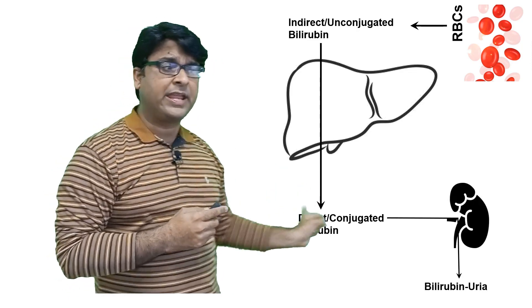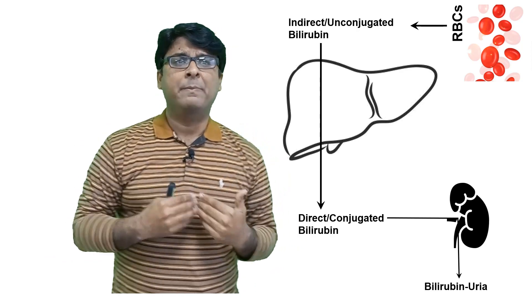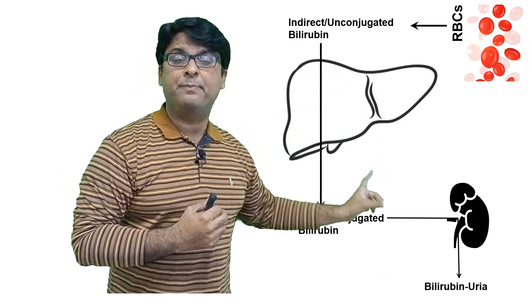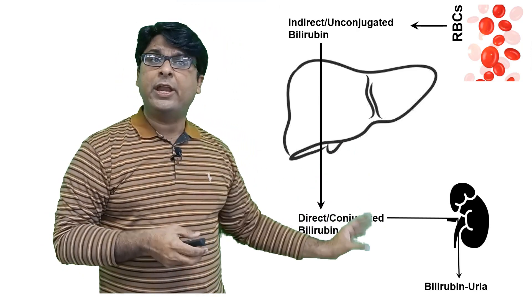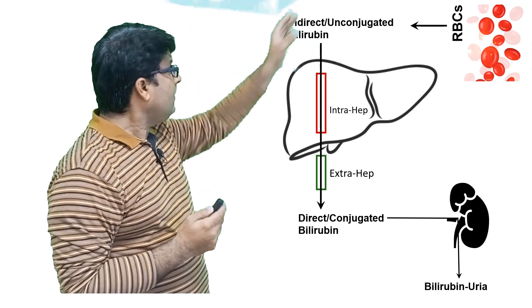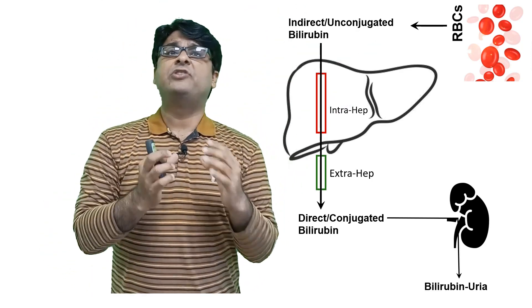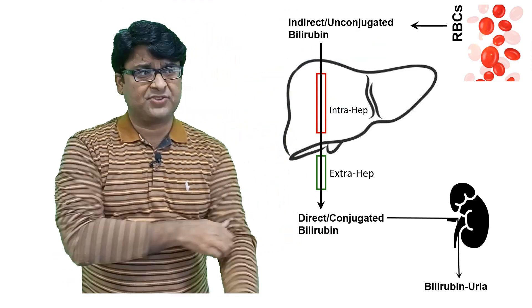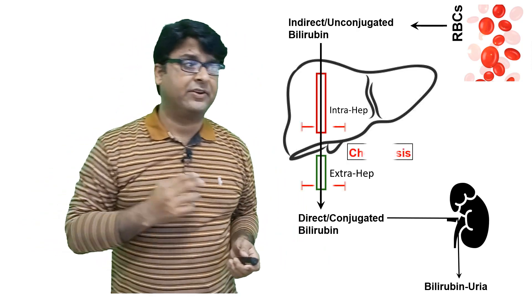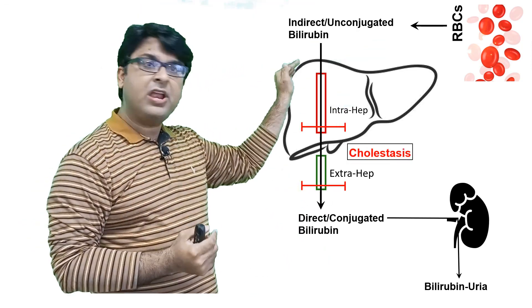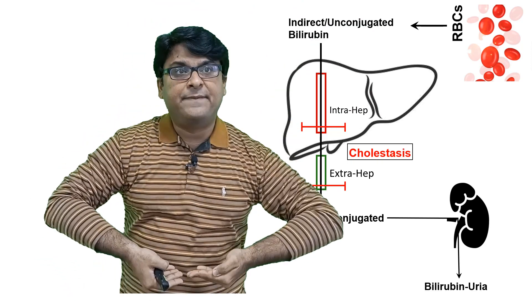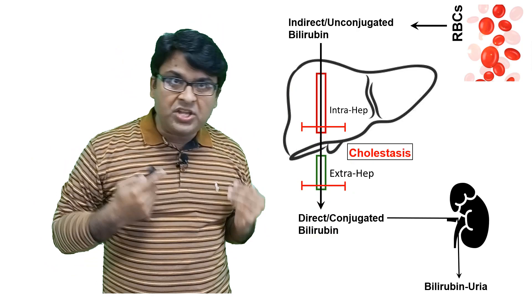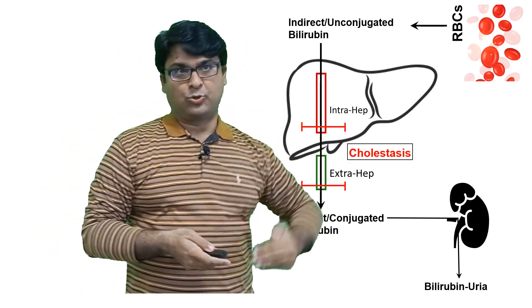Conjugated bilirubin can be excreted in the urine — this is what we call bilirubinuria. Unconjugated indirect bilirubin cannot be excreted via the kidney; only conjugated bilirubin appears in urine. There is a ductular system within the liver: the ducts inside the liver are called intrahepatic ducts, and those outside are extrahepatic ducts. If there is blockage at any level — intrahepatic or extrahepatic — things will pool up and not be secreted out of the liver. This pooling is what we call cholestasis.